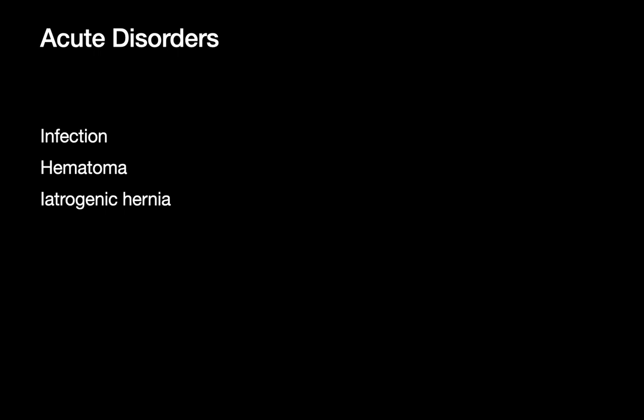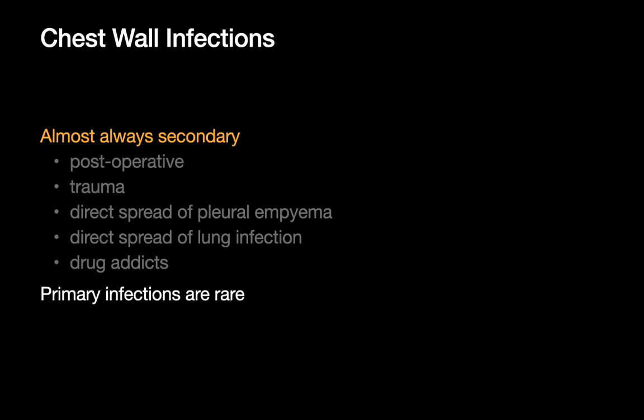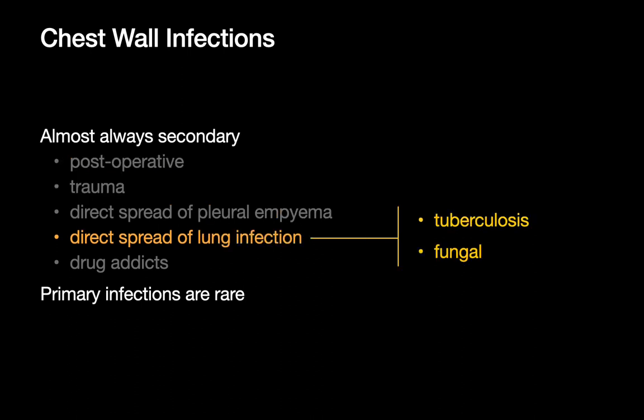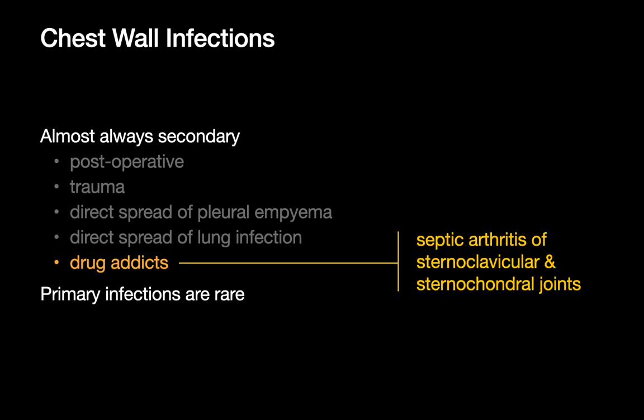Now let's talk about acute chest wall disorders: chest wall infections, hematomas, and iatrogenic hernias. Chest wall infections are usually secondary — staph aureus and pseudomonas are common culprits when associated with recent surgery, trauma, or direct spread of empyema. When the source appears to be lung infection spreading to the chest wall, tuberculosis and fungal infection are considered. In drug addicts, septic arthritis is a common source, either from the sternoclavicular or sternocondral joints.